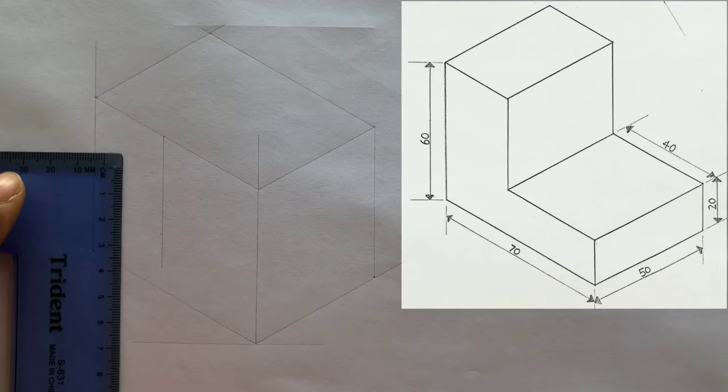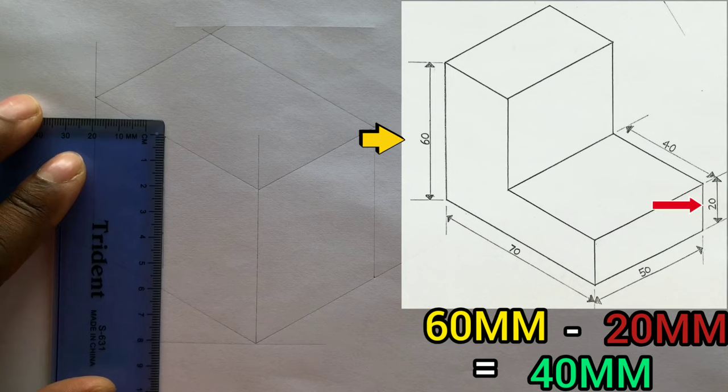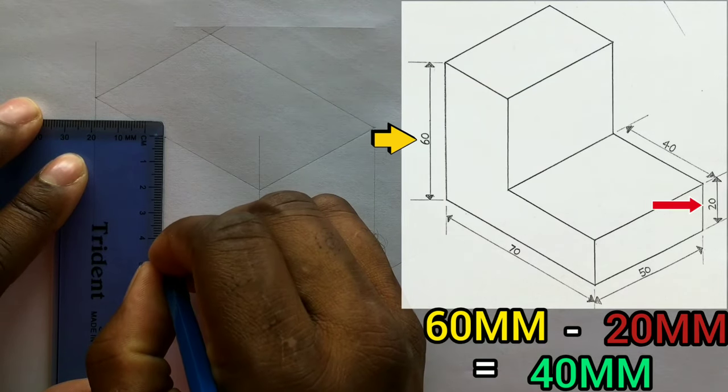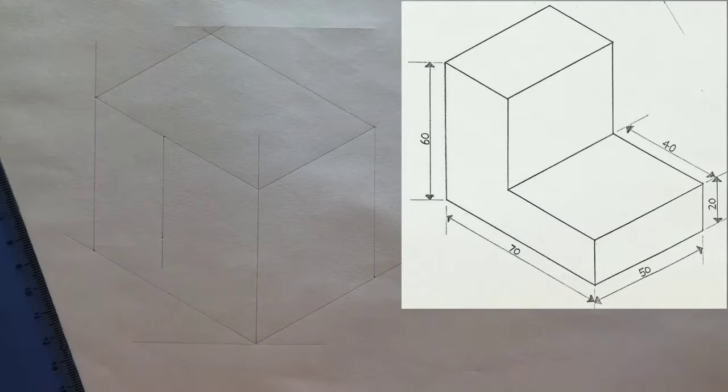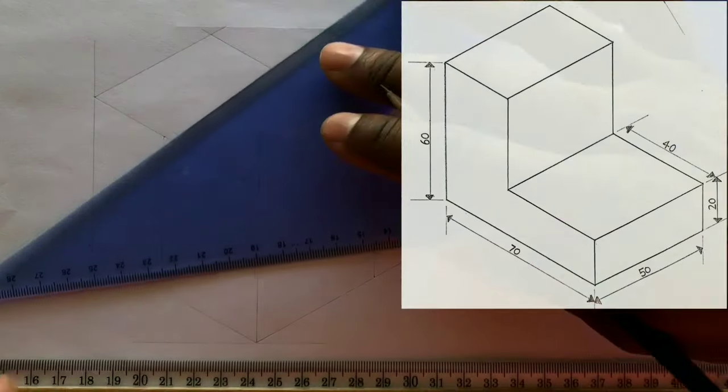Now measure and identify 40 millimeters on this line. Now use your set square along with your t-square and draw this line.